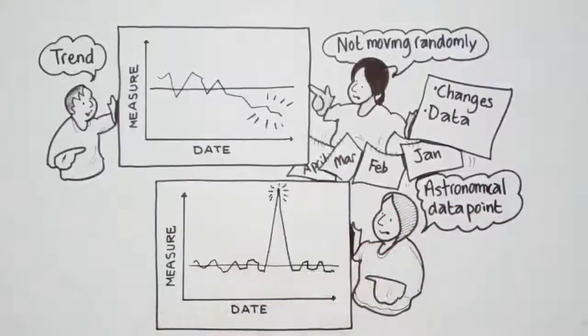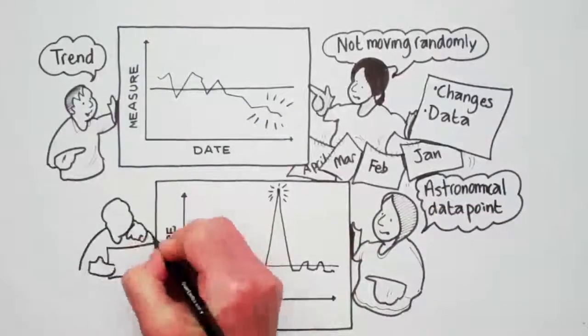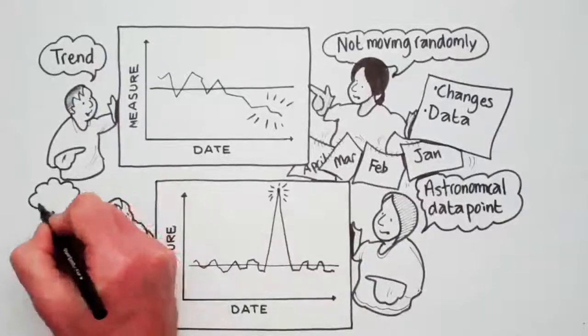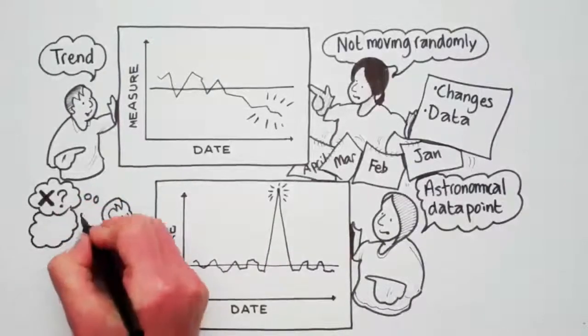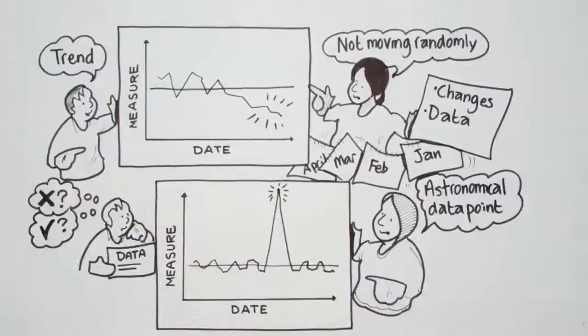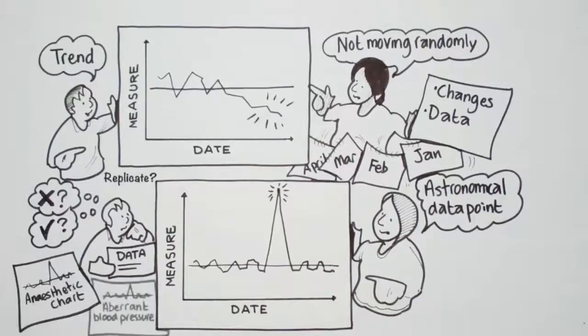Another feature to look for is an astronomical data point, one that's way out there and different from all the rest. You should look at that data in depth to see if there was something that made things go wrong or work very well that you could replicate. We see these in our anesthetic charts as an aberrant blood pressure measurement. Sometimes it doesn't mean there's something wrong, but at least we should check it closely.